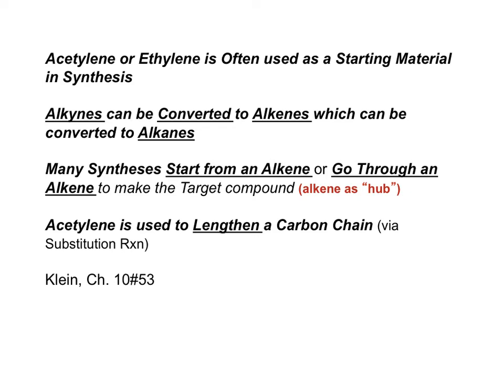Alkynes can be converted to alkenes, which convert to alkanes. Acetylene, or a terminal alkyne, is used to lengthen a carbon chain. Remove the proton from acetylene to form the acetylide ion, and then use the acetylide ion to react with an alkyl halide in a substitution reaction. That will form a carbon-carbon bond to make a bigger molecule.